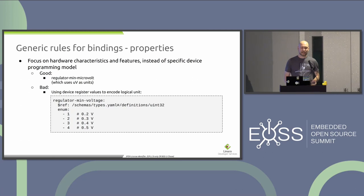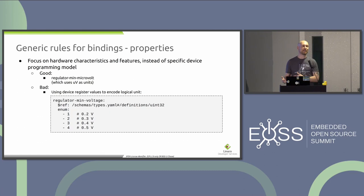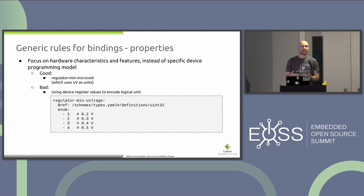Other generic rules about bindings: properties should represent hardware characteristics. A good example is a regulator — if it has a voltage, the minimum voltage should be in microvolts. The anti-pattern is representing it in register values. If a property maps to a physical phenomenon, use common units. DT schema has a defined set of such units — microvolts, microamps, kilohertz, percent — and I'll mention this further.